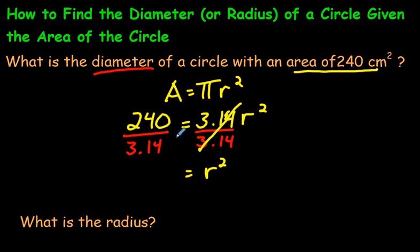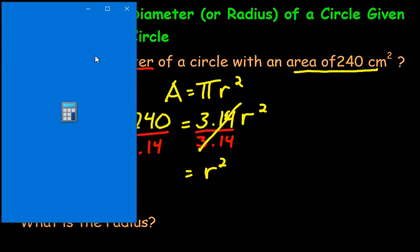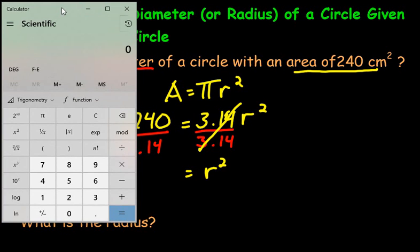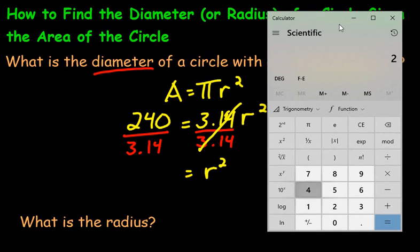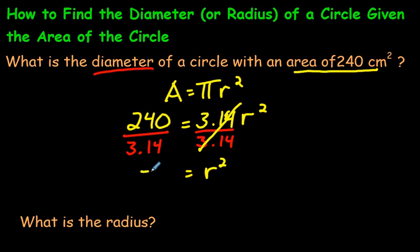So r squared is all by itself, with the invisible 1 there, and 240 divided by 3.14, I'd like to figure that out. I'm going to use a calculator. I'm sure you'll be allowed to in your class too. So 240 divided by 3.14, and we are left with, let's round it off, 76.4.